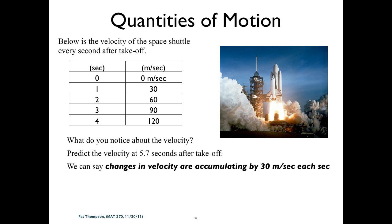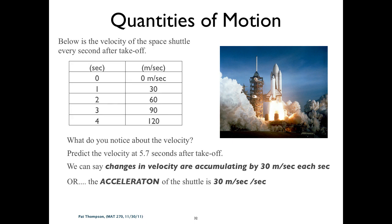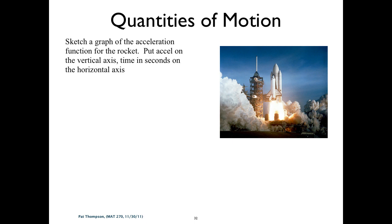The changes in velocity are accumulating by 30 meters per second each second, or the acceleration of the shuttle is 30 meters per second per second. Sketch a graph of the acceleration function for the rocket — put acceleration on the vertical axis and time on the horizontal axis.